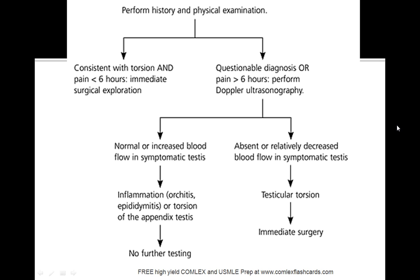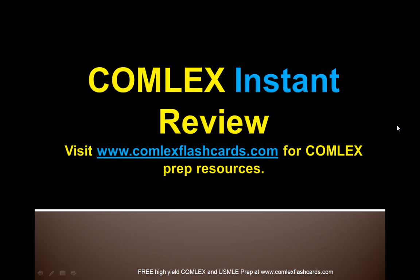If, however, there's a positive urinalysis and normal to increased blood flow, then you're looking at some sort of inflammation — an orchitis or epididymitis. Torsion is lower on your differential, and you don't need any further testing at this point.